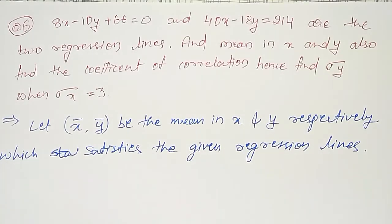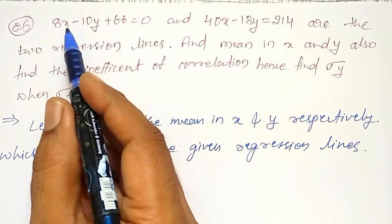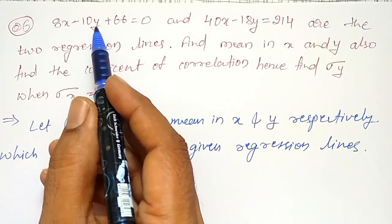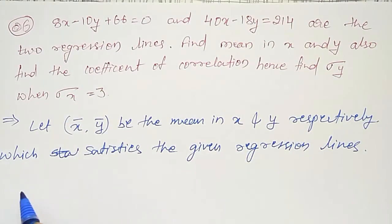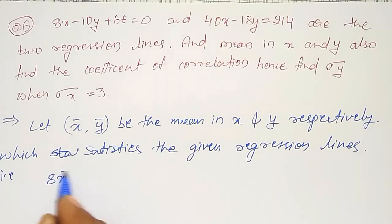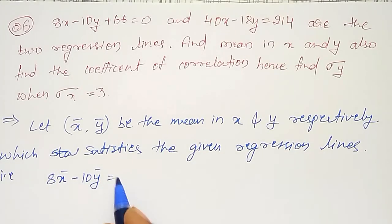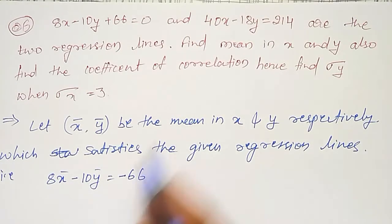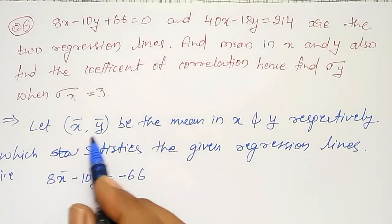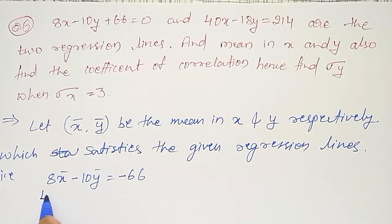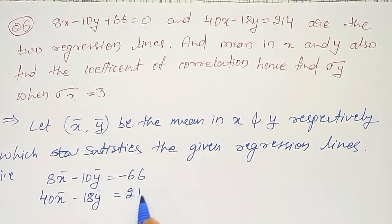If they satisfy the regression lines, it means replacing X with X bar and Y with Y bar in both equations, they will satisfy each equation. That is: 8·X̄ − 10·Ȳ = −66. And the second equation also satisfies both X bar and Y bar: 40·X̄ − 18·Ȳ = 214.